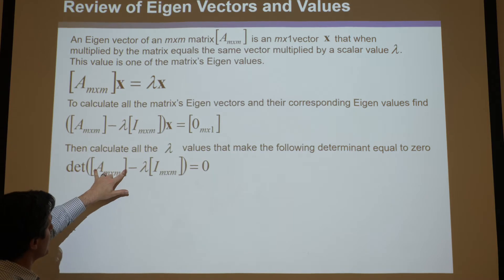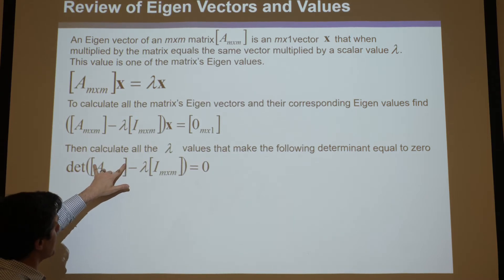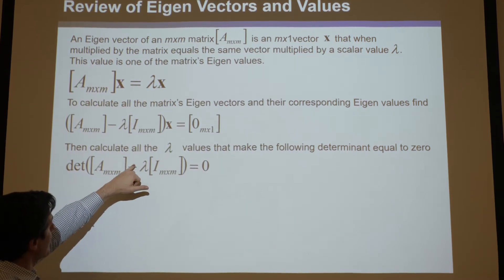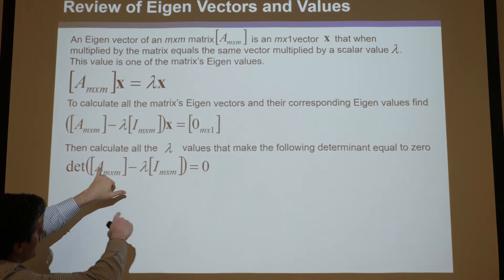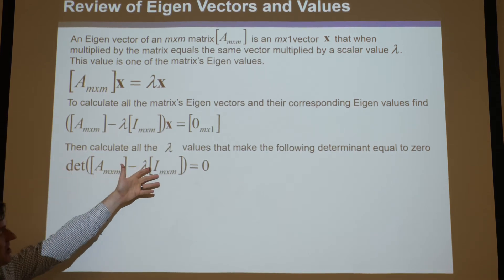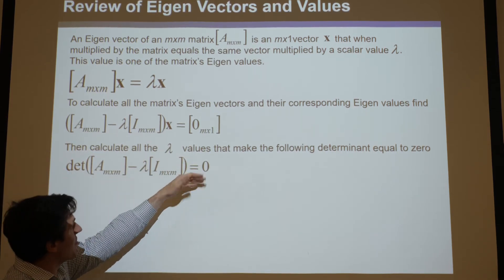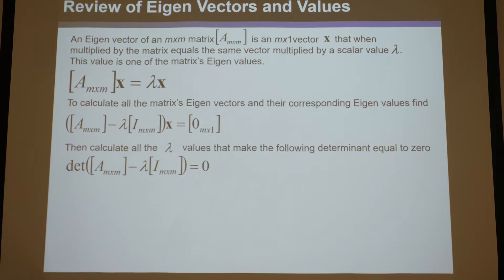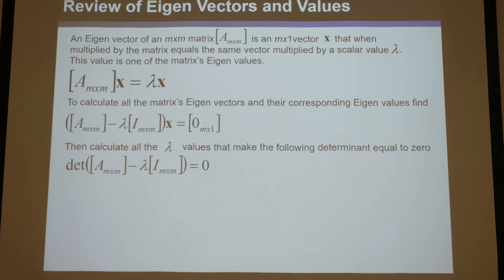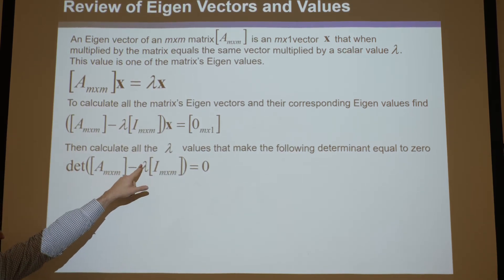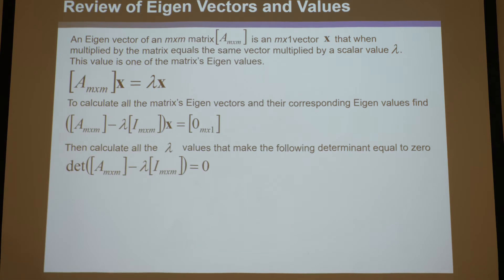So if you take this matrix and you're trying to find the eigenvectors and eigenvalues, you subtract all of its diagonal components from some scalar lambda, take the determinant, set it equal to zero, and thereby solve for all those lambdas. If it's an m by m matrix, you'll find m solutions — m different lambdas that make the determinant equal to zero.